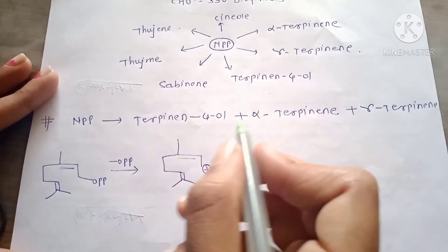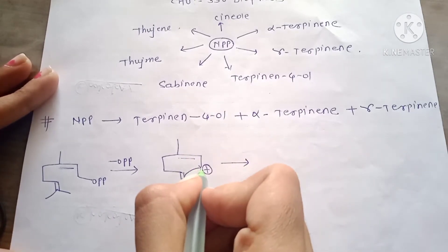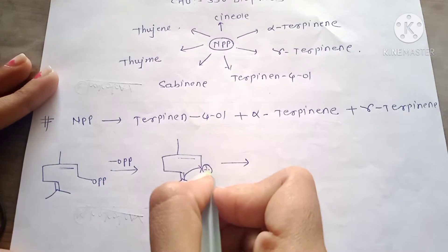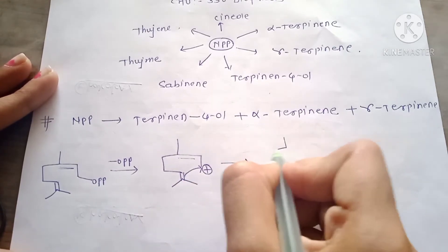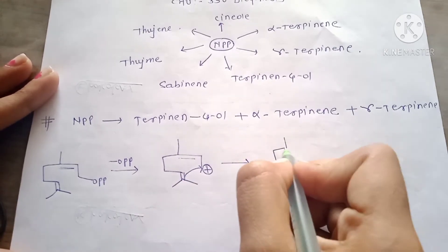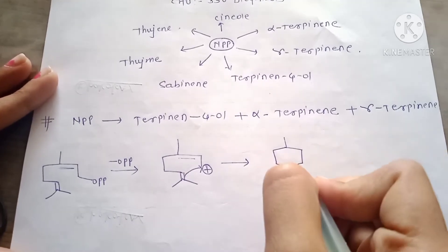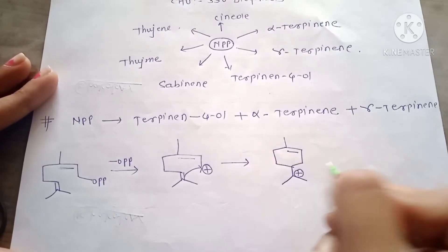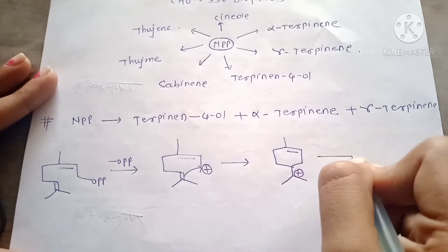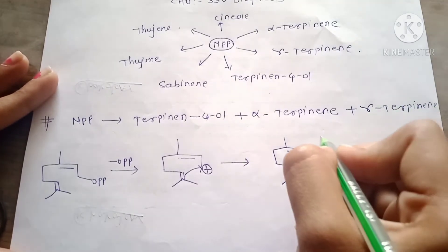Next step: this pi bond attacks here and stabilizes the positive charge, and we will get the 6-membered cyclic ring with positive charge here. Next step is the 1,2-hydrogen shift.